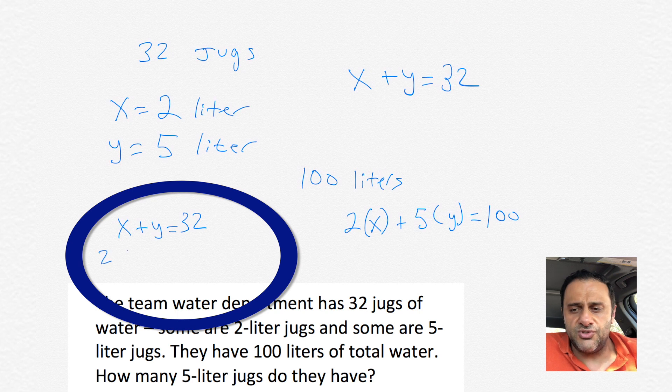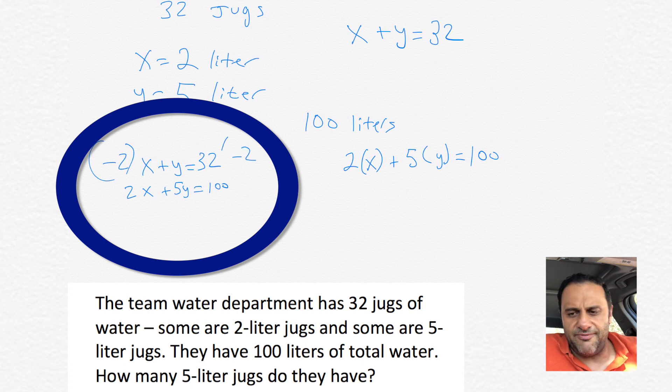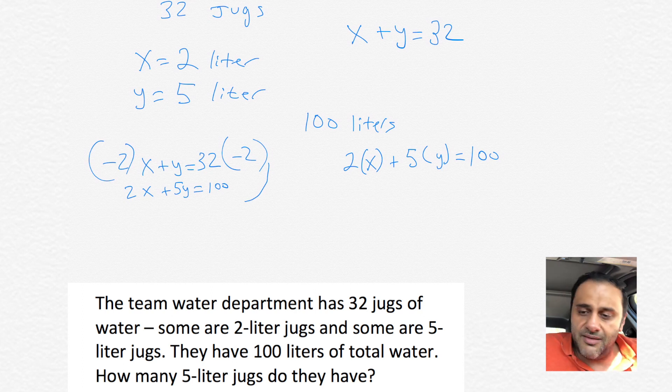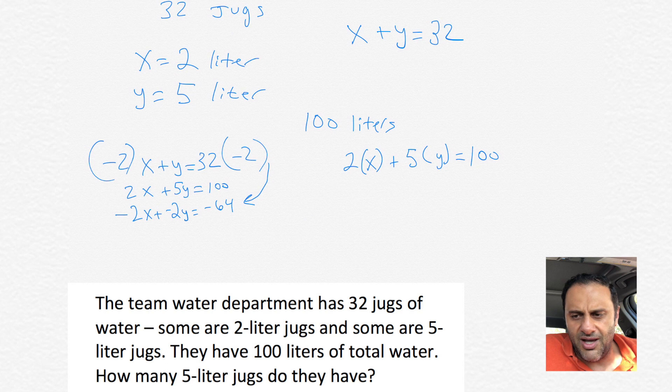We can add that to 5 times the 5-liter jugs, and all of that will equal 100, as we have 100 total liters of water. So now we have two equations and we have two unknowns. We have X plus Y equals 32, and we have 2X plus 5Y equals 100. Now we can do it a couple ways. We can substitute it like we did the last one, or I'll show you a different method. If we take that top one and we multiply negative 2 to each side, we're gonna have negative 2 times X plus Y equals 32 times negative 2.